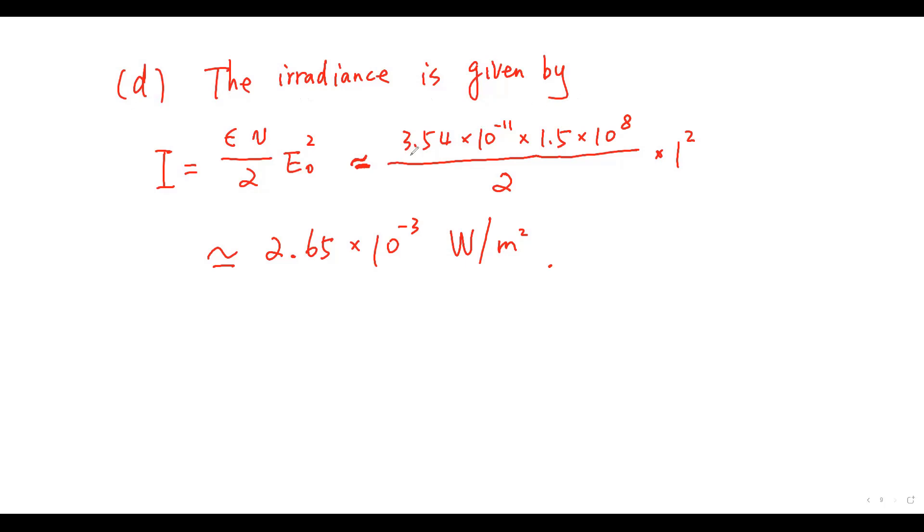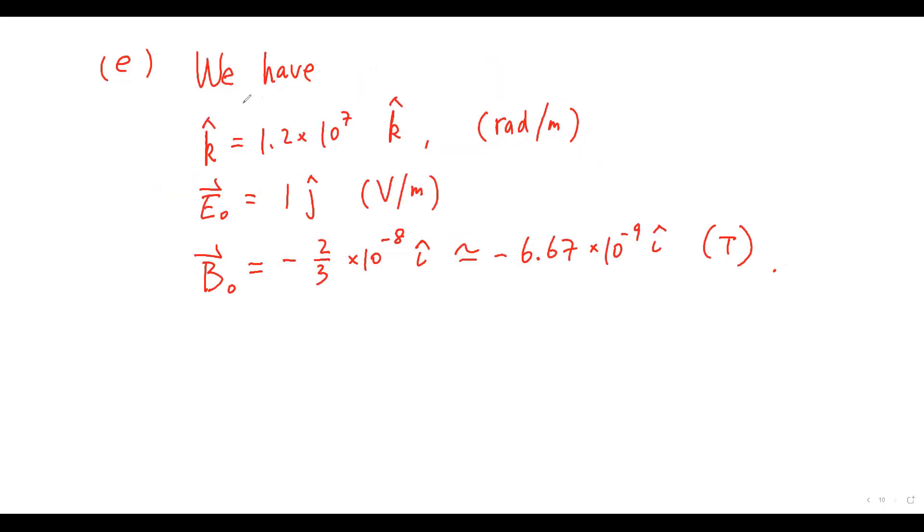The irradiance is given by I equals this value. Then, we can draw E0, B0, K in the Cartesian coordinate system. Thanks for watching.